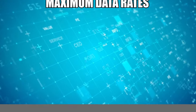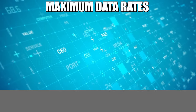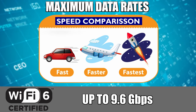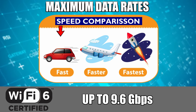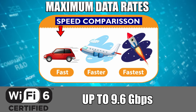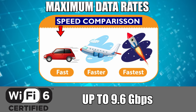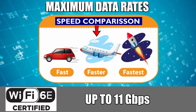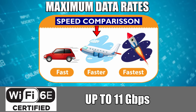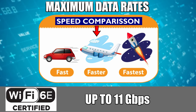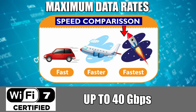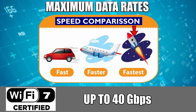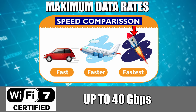Let's compare maximum data rates. Wi-Fi 6 supports maximum data rates of up to 9.6 gigabits per second. Wi-Fi 6E can support up to 11 gigabits per second. And Wi-Fi 7 supports maximum data rates up to 40 gigabits per second.